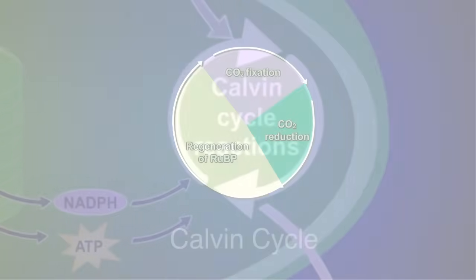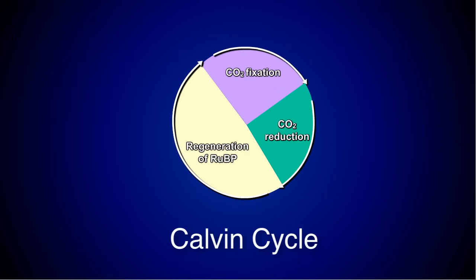Let's zoom into the Calvin cycle to take a closer look. The Calvin cycle can be divided into three phases: carbon dioxide fixation, carbon dioxide reduction, and regeneration of RuBP.